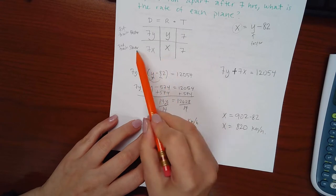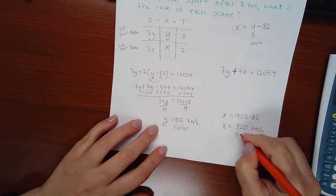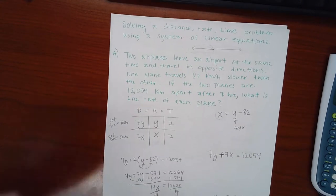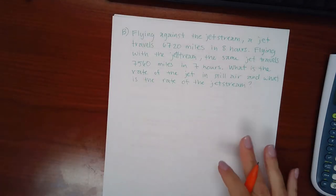And then, of course, x is the slower. So this would be the slower plane. Now, I am going to do a second example because it's kind of a different scenario.